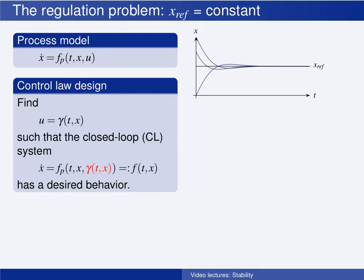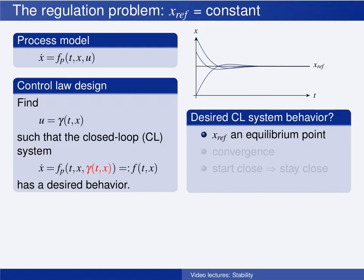The closed-loop system is what we get when we plug the control law into the process model, substituting gamma for u. The resulting function on the right-hand side we call f, and it is a function of time t and state x. So what is the desired behavior of the closed-loop system? First, we want the constant reference value to be an equilibrium point of the closed-loop system. Being an equilibrium point means that when the state has this reference value, the right-hand side of the closed-loop equation is zero — meaning that when the system state has reached this reference value, the state will change no more and will stay there for all future time.